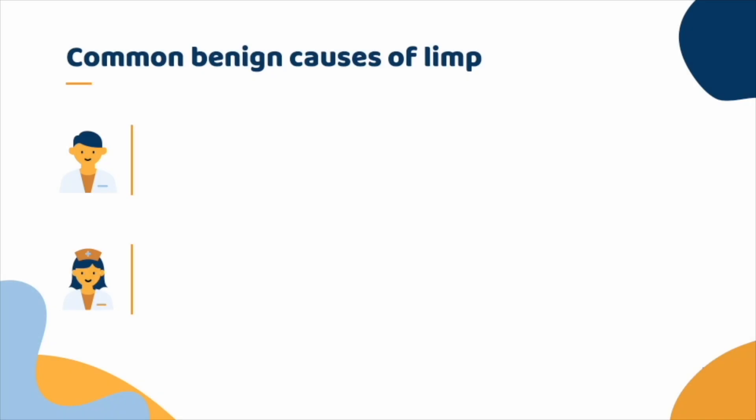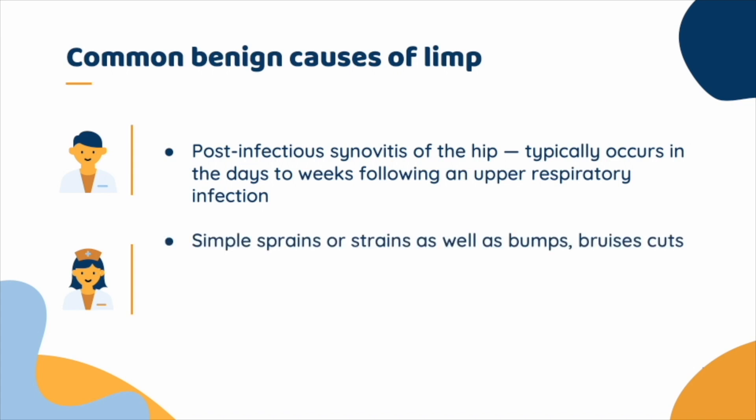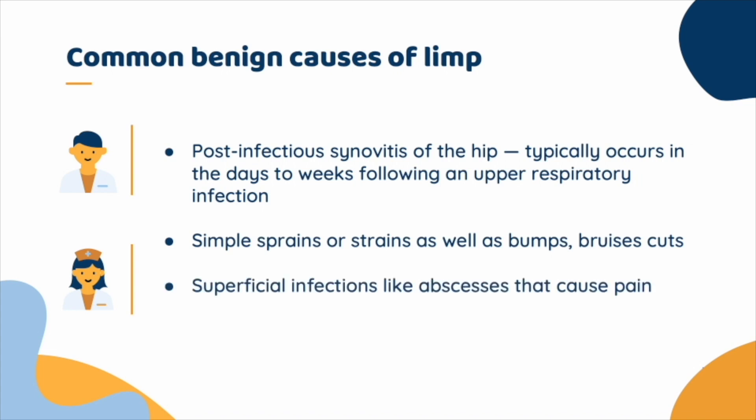The common and much more benign causes of limp include post-infectious synovitis of the hip, which typically occurs in the days to weeks following an upper respiratory infection, simple sprains or strains, as well as bumps, bruises, cuts, or superficial infections like abscesses that cause pain and therefore cause limp.